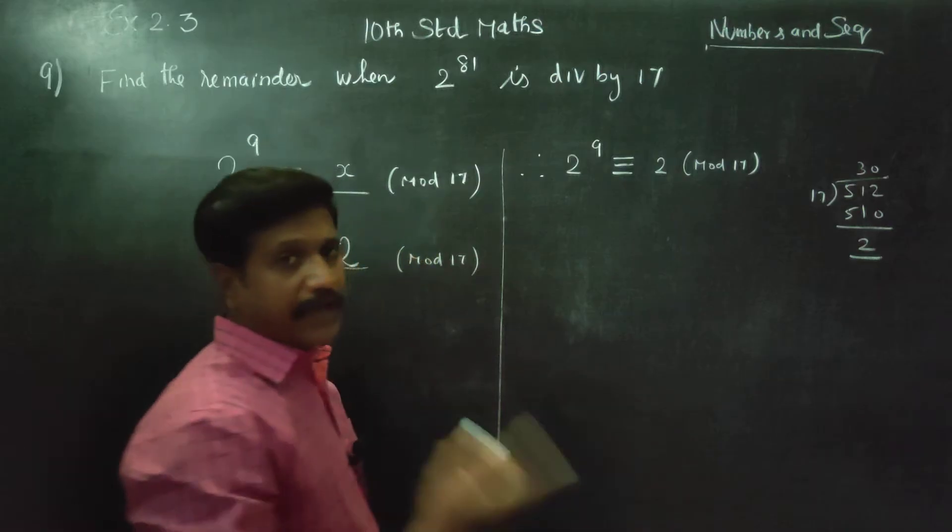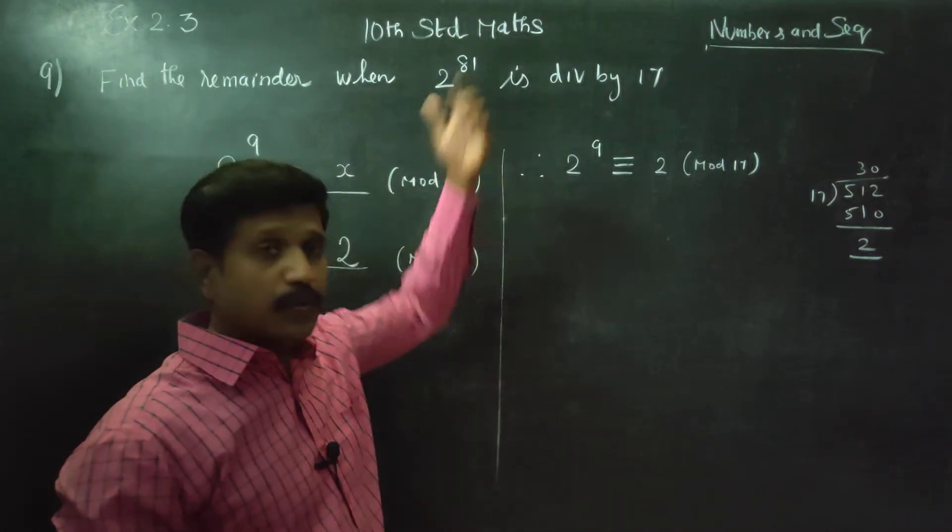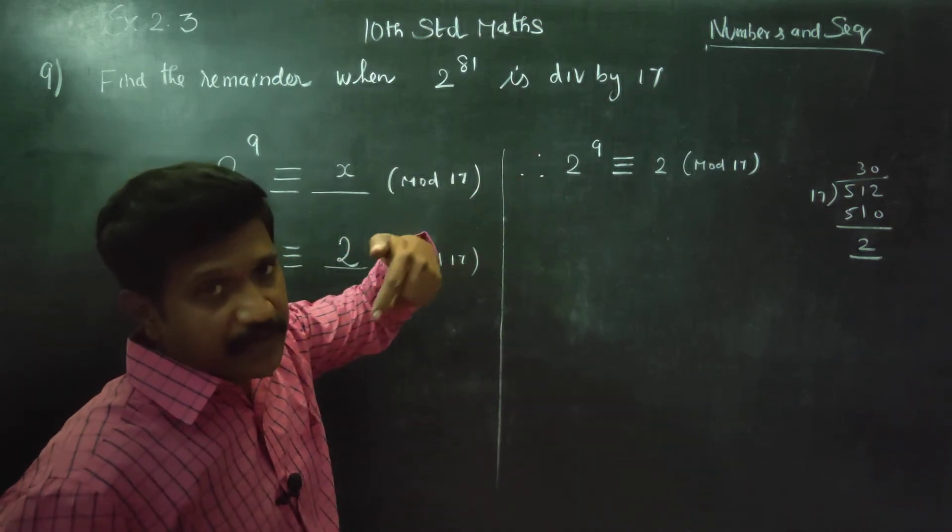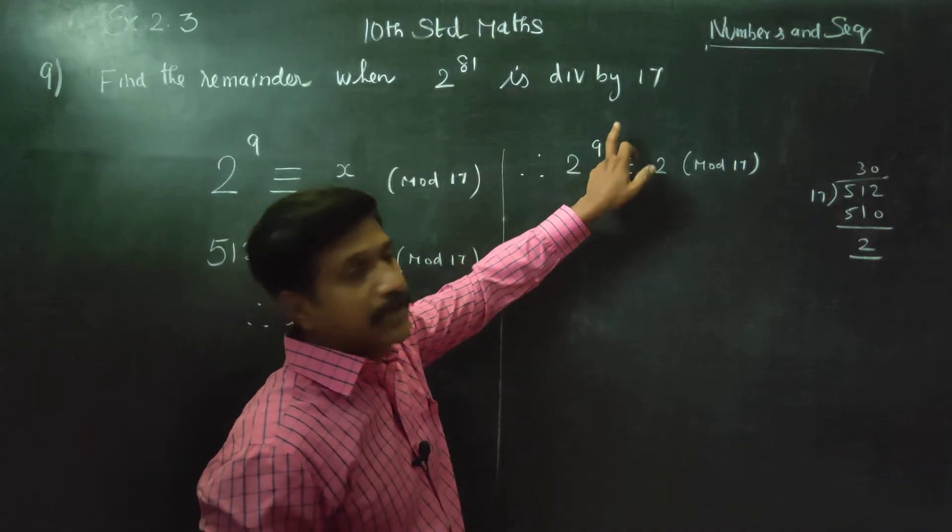Again, let me explain. We want 81. Now, when we have 81, power to the power multiply is 81. If power to the power, that is 81 equals 9 multiplied by 9.